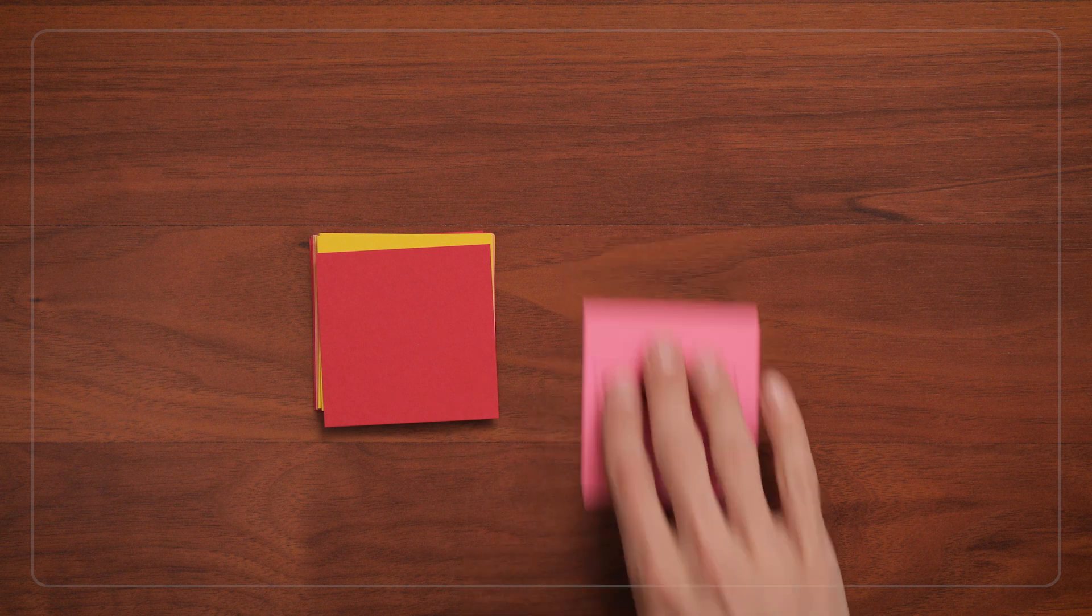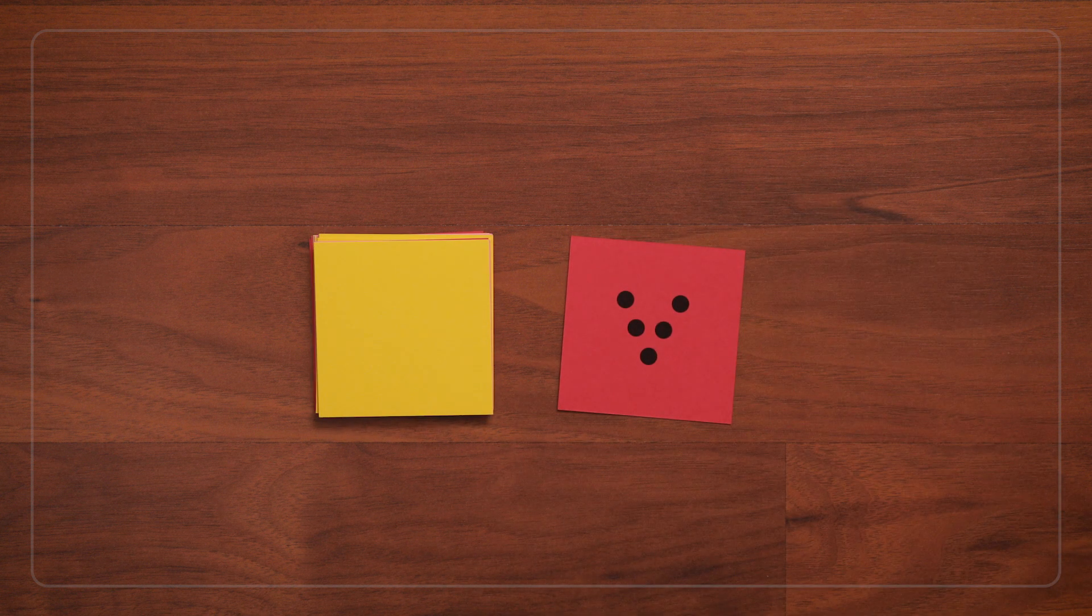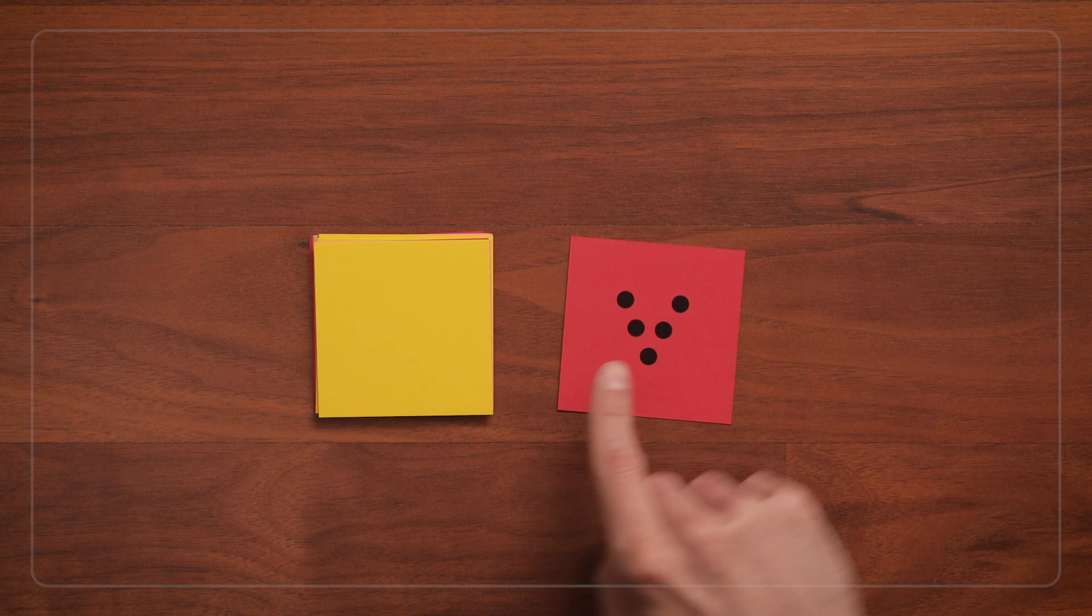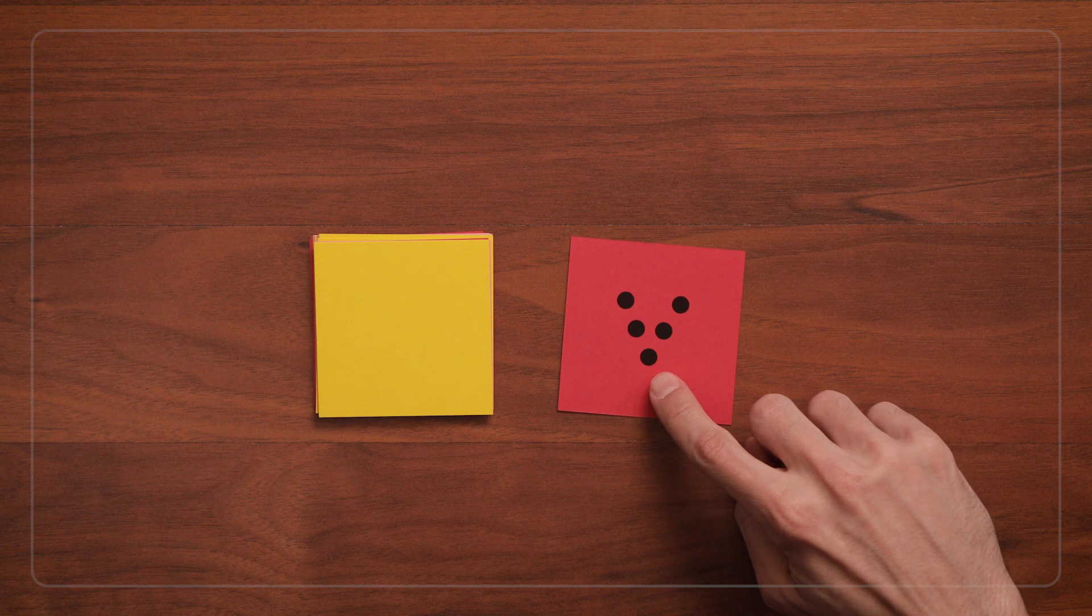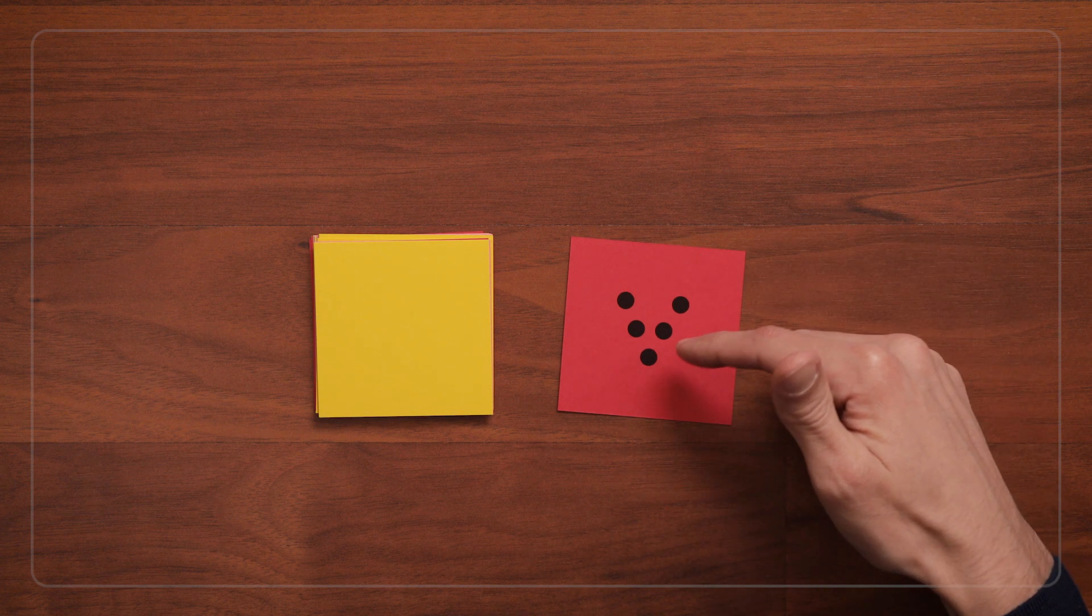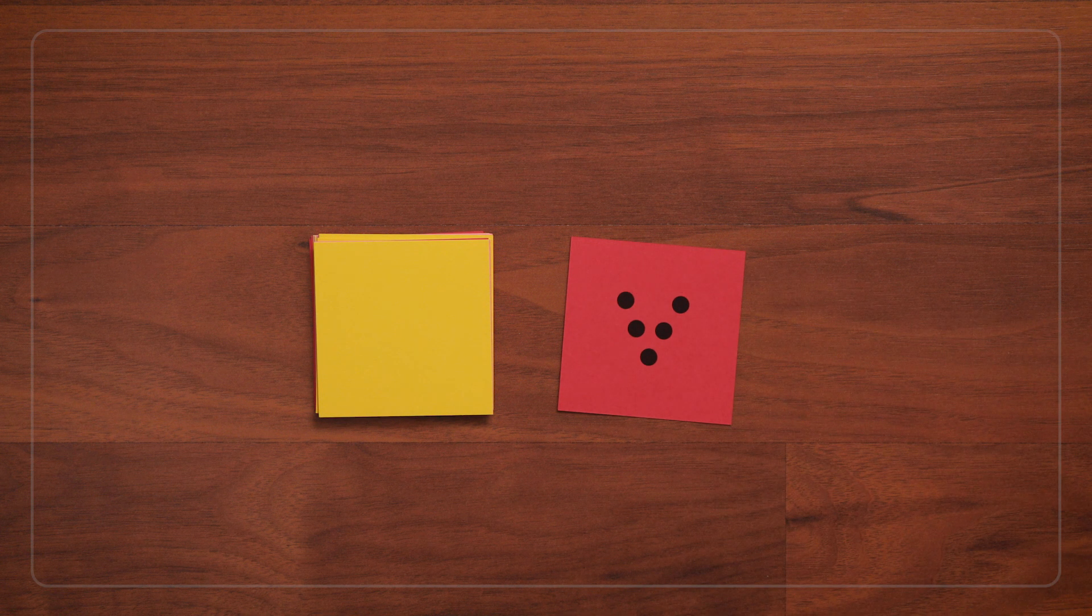What's really great about this game is that everyone sees the quantities, or dot configurations, in different ways. On this card, you might see three on one side and two on the other, or one at the point and two on each side, or three in a triangle and then two more. There are lots of different ways to see quantity.